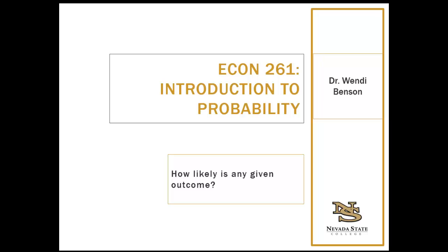Typically, we will collect some data, look at the proportion of specific events in that data, and then assume that the probability of those events happening in the future is equal to that proportion. Some examples of probability in business: let's say that an e-commerce business wants to know the probability that a customer will make a purchase after browsing their website for more than 10 minutes.